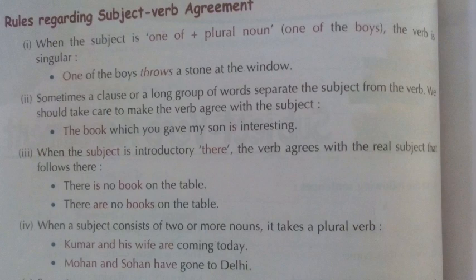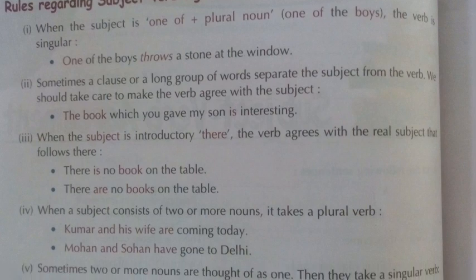Rule three: when the subject is introductory 'there', the verb agrees with the real subject that follows. If a sentence begins with 'there', we choose is/am/are/was/were based on the real subject ahead — not always 'are' or always 'is'. For example: 'There ___ many boys' — the subject is 'boys', which is plural, so: 'There are many boys.' 'There ___ a cat' — 'a cat' is singular, so: 'There is a cat.' Similarly: 'There is no book on the table' / 'There are no books on the table.'